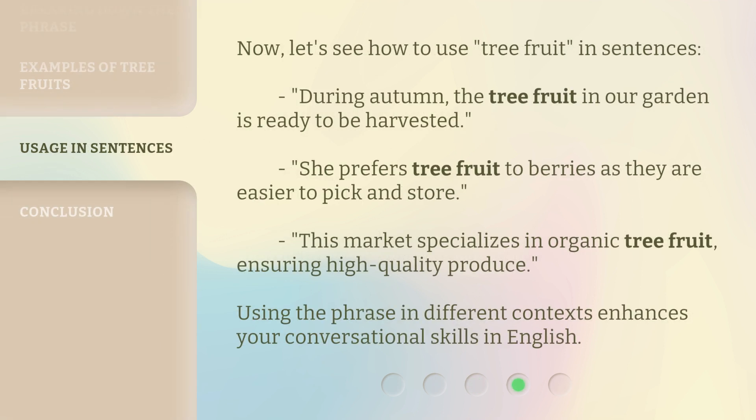Now, let's see how to use 'tree fruit' in sentences. During autumn, the tree fruit in our garden is ready to be harvested. She prefers tree fruit to berries as they are easier to pick and store. This market specializes in organic tree fruit, ensuring high quality produce. Using the phrase in different contexts enhances your conversational skills in English.